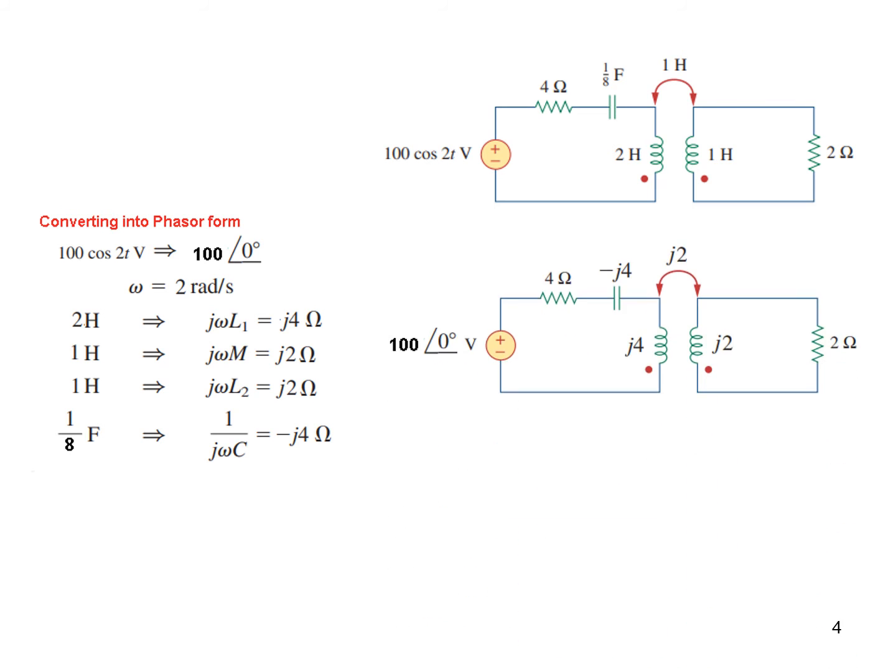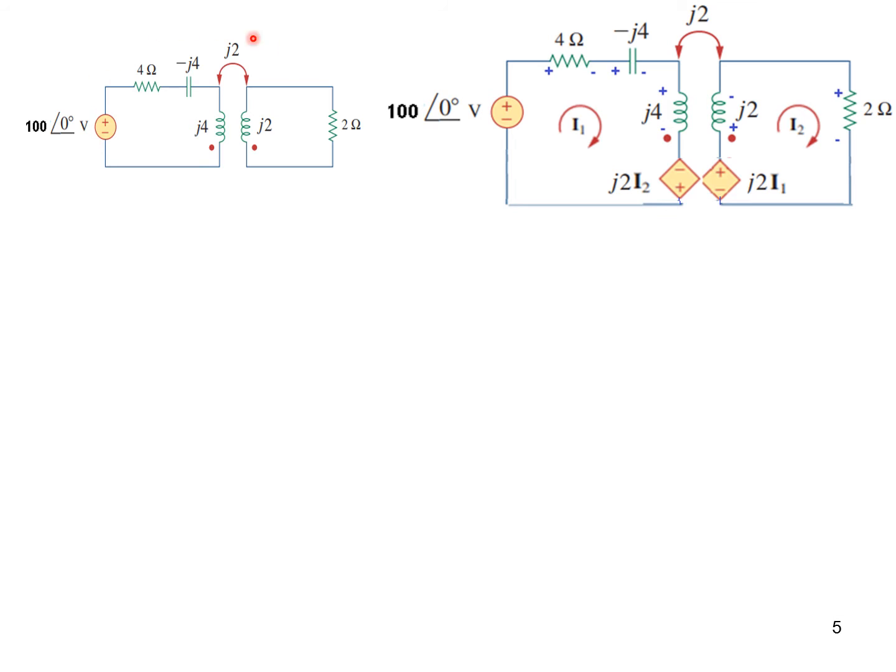Now we draw the phasor circuit, putting all the phasor values here. So this is our circuit and we will solve this circuit to find I1 and I2. The first step that we will do in the phasor circuit is that we have to incorporate these dependent sources for the induced voltages. We have already learned that in loop 2, the voltage will be induced due to I1, and j2 into I1 will be the amount of voltage. And similarly on the primary side, the voltage will be induced due to I2 current. So M I2, or j2 I2, will be the value of the voltage here.